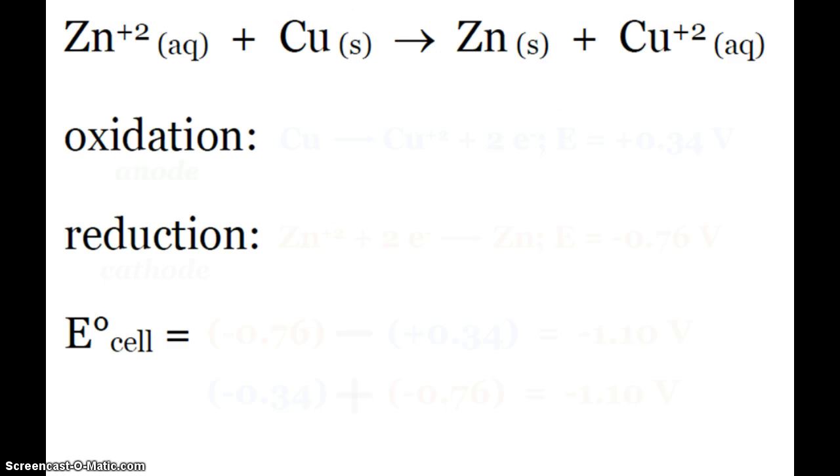Here we have a reaction, and it asks us, is this reaction thermodynamically favored as written? If that's going to happen, our E0 of our cell, our cell potential, our cell voltage needs to be positive, so you have to calculate the E0 of the cell. If it's a positive value, the reaction is thermodynamically favored as written. If it's negative, it's not, but the reverse would be.